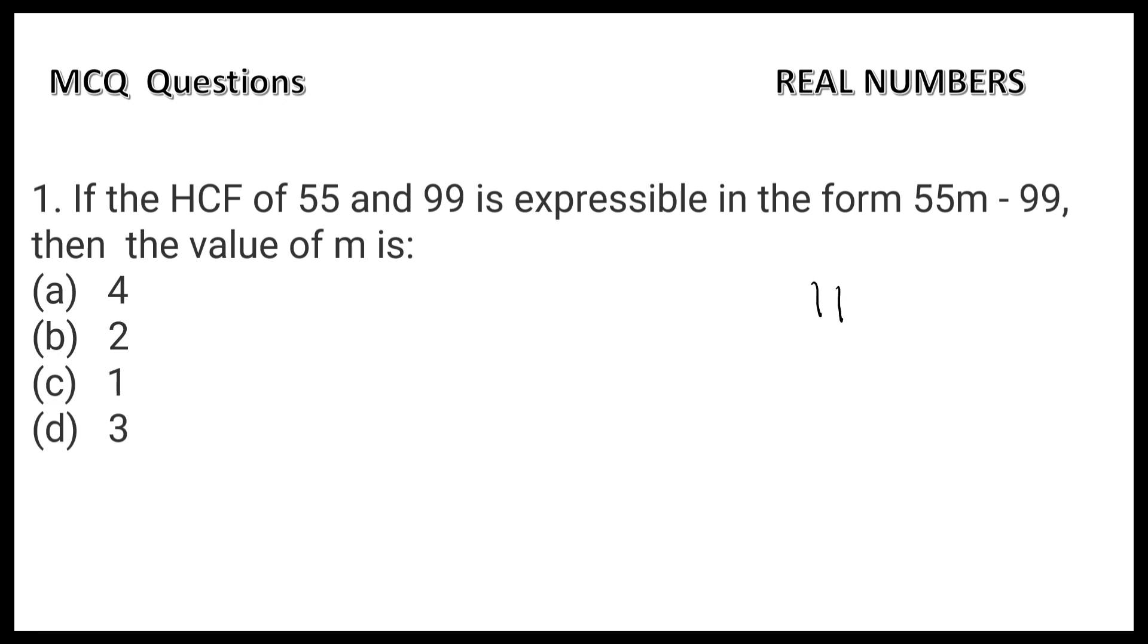The highest common factor is 11. So, 55m - 99 equals 11. Here, 11 is common, so we can write 11(5m - 9) = 11. Cancelling 11 from both sides, we get 5m - 9 = 1.